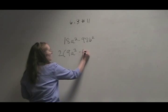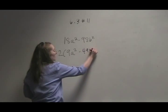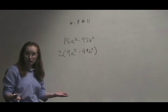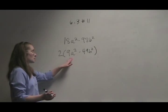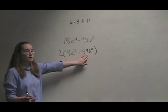We're left with 9a squared minus 49b squared. Now is this perfect squares? Yes, it is. 9 is a perfect square, so is 49.